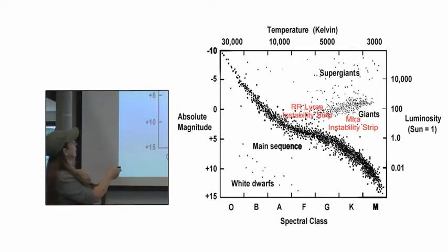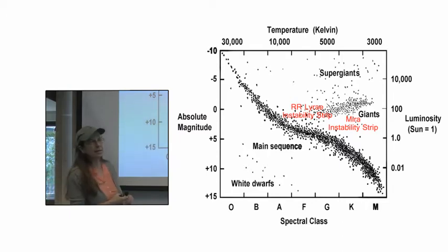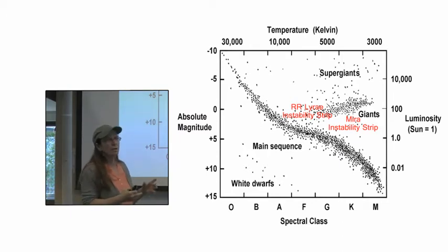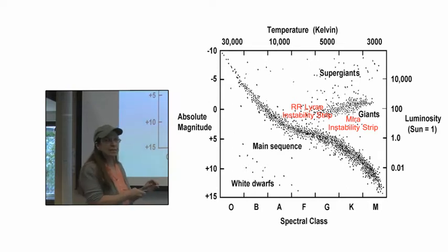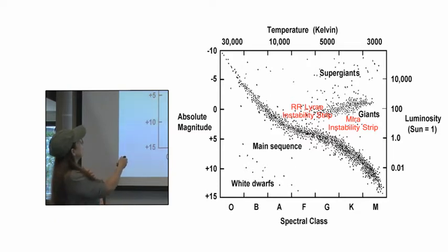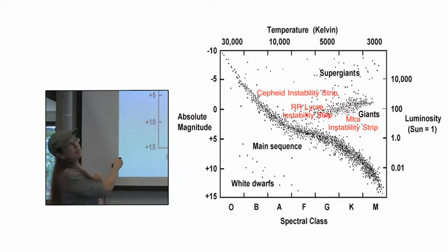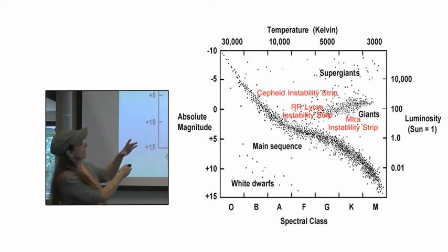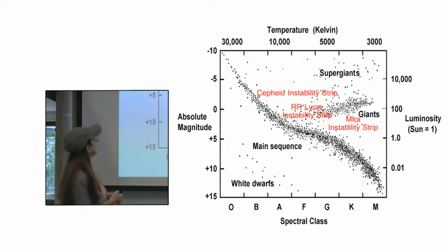Over here, at the very end of the red giant branch, we have the R.R. Lyrae instability strip — very old, low-metallicity stars that have descended all the way down to the very bottom of the red giant branch. The Cepheid instability strip covers more massive stars that leave the main sequence on the H.R. diagram and move horizontally to the supergiant branch.